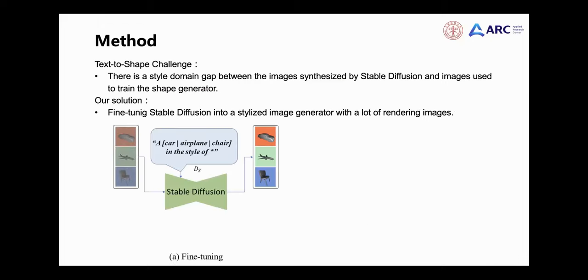Inspired by recent works such as textual inversion and DreamBooth, we propose an algorithm for fine-tuning stable diffusion to solve this style-domain gap problem. Specifically, we use a large number of rendering style images to fine-tune the weights of stable diffusion, while optimizing a prompt word that can best summarize the style of the rendering images.